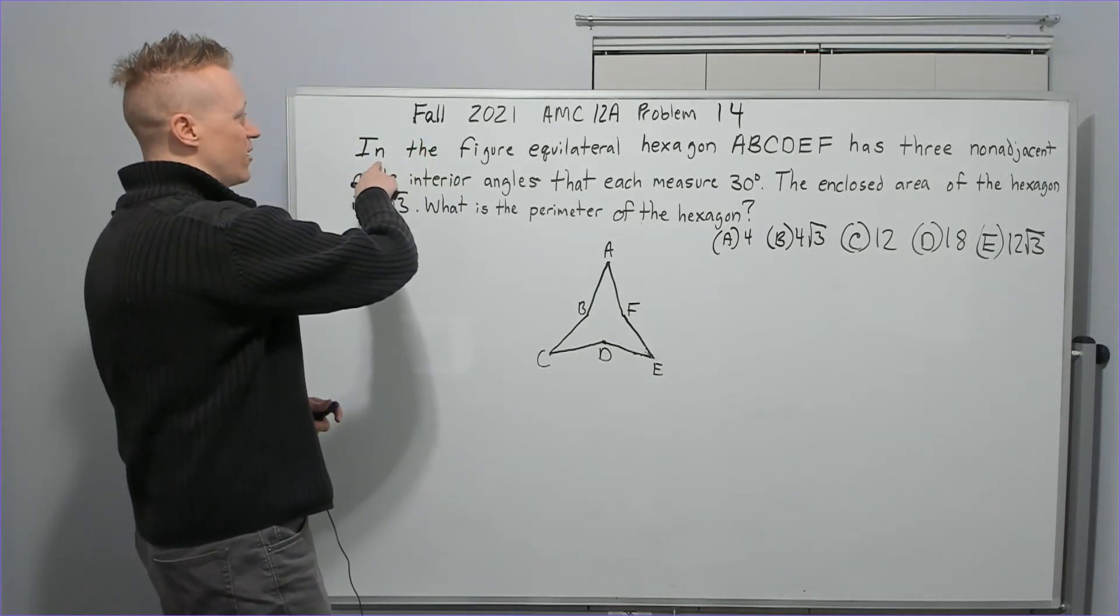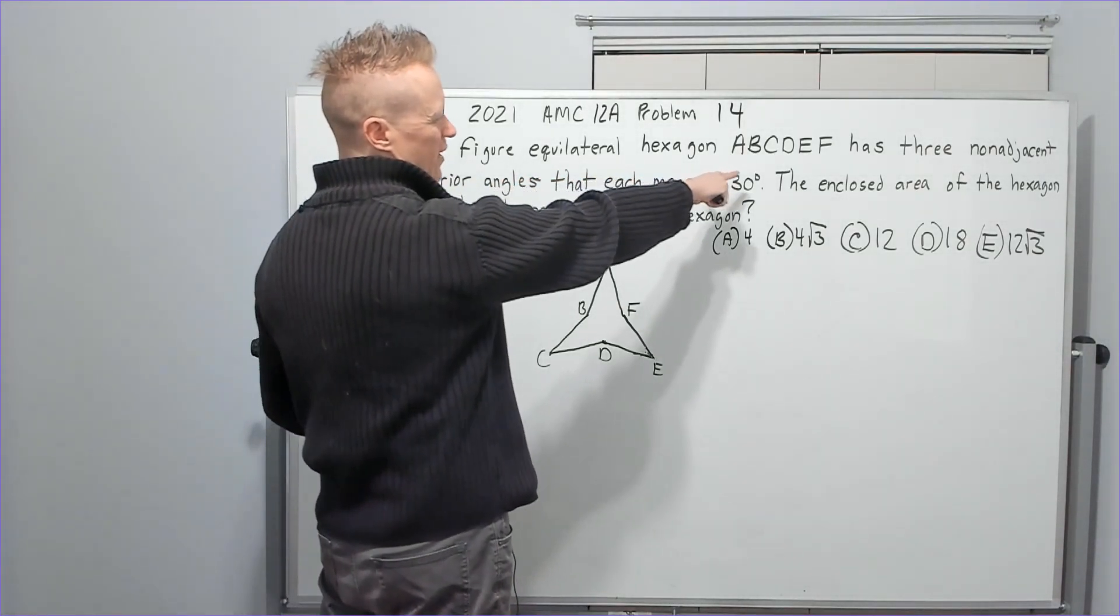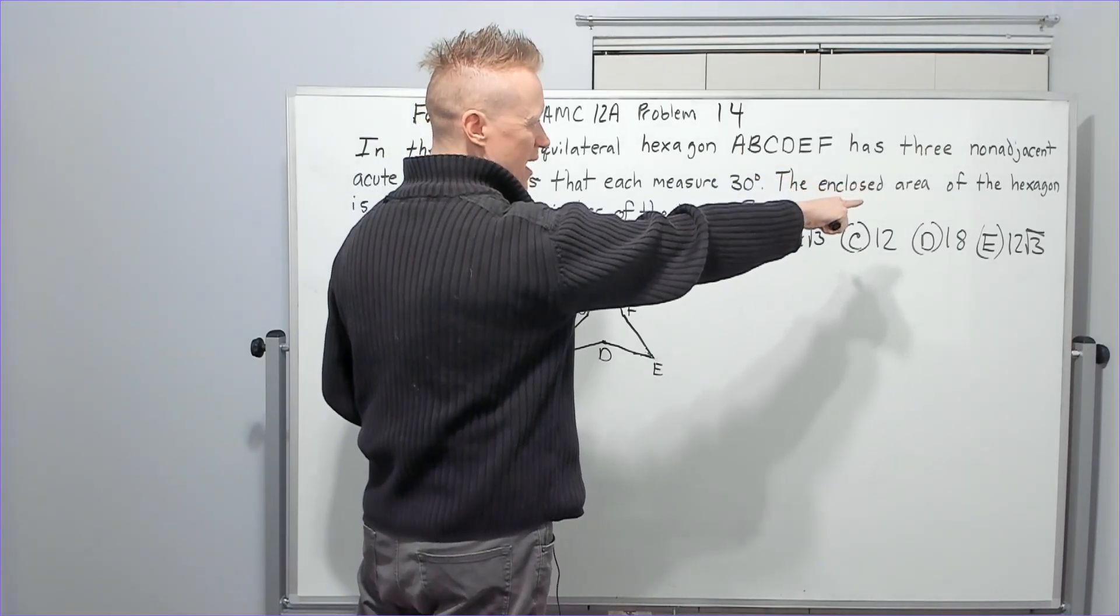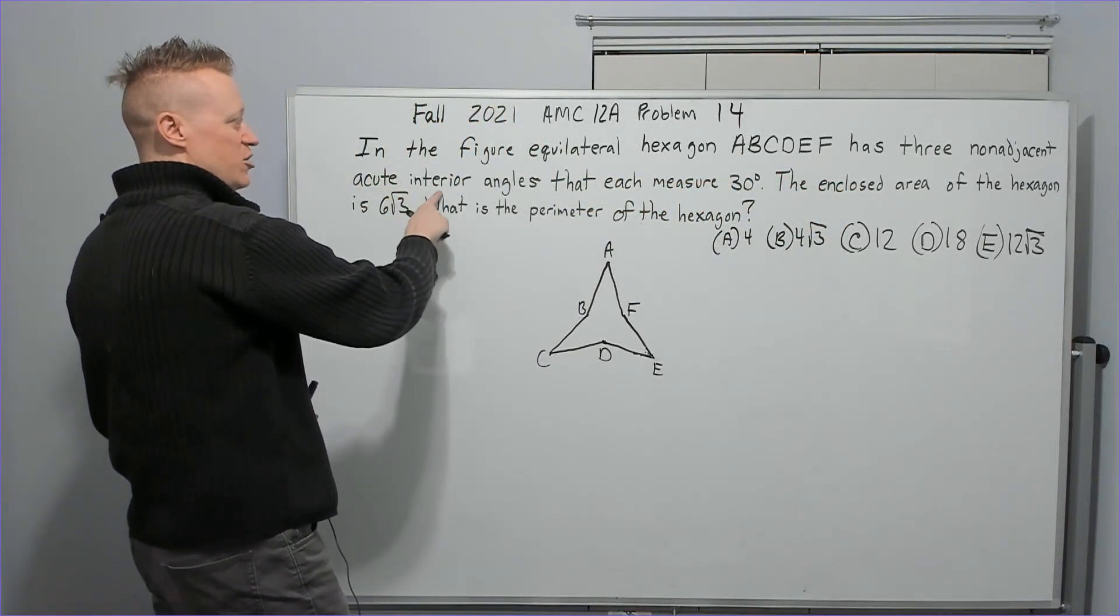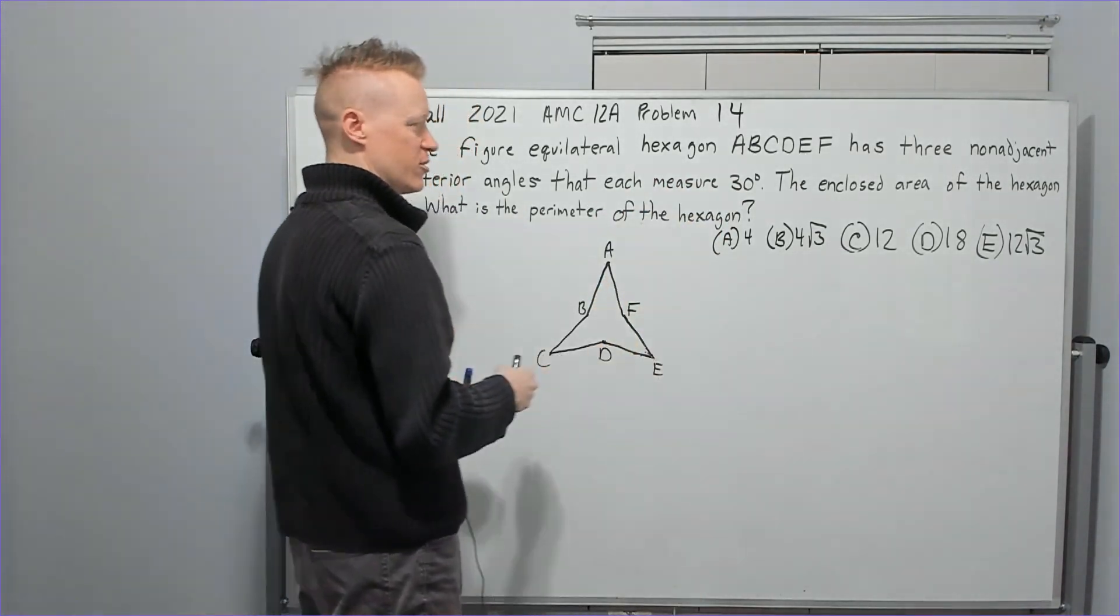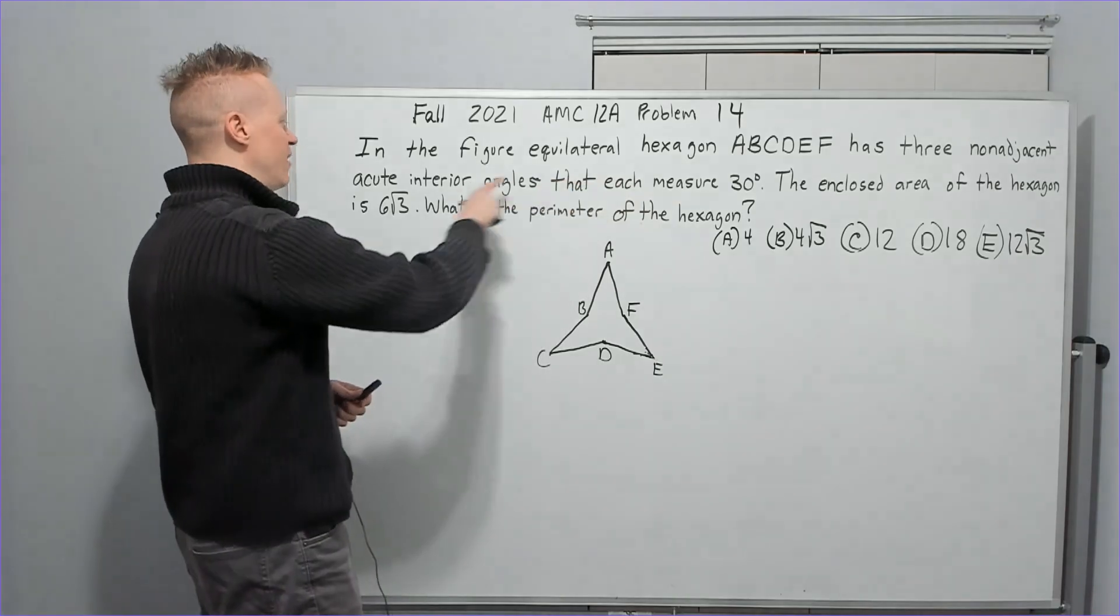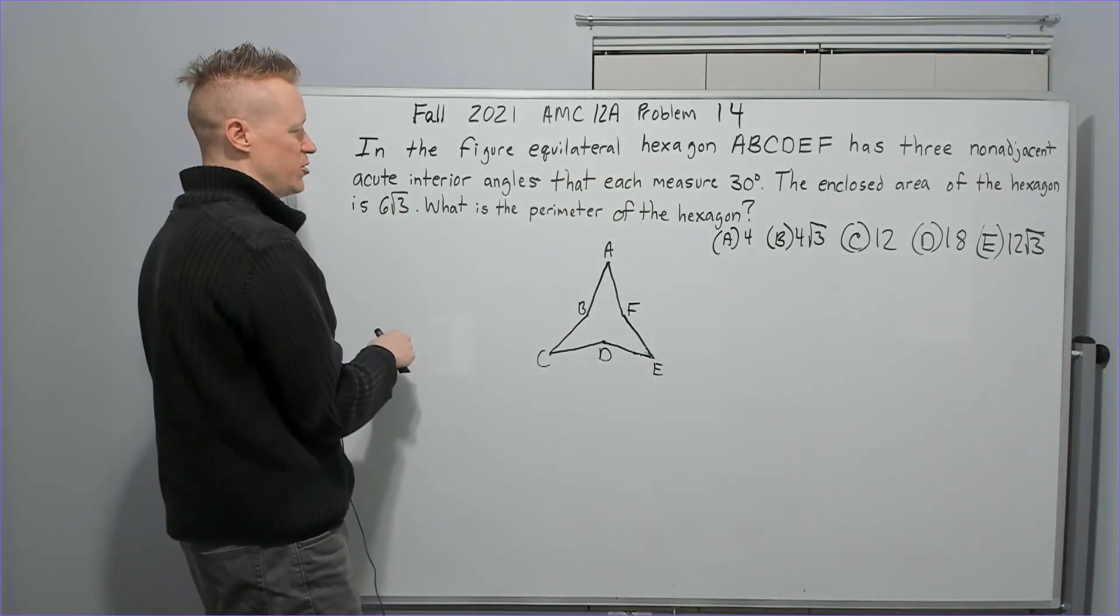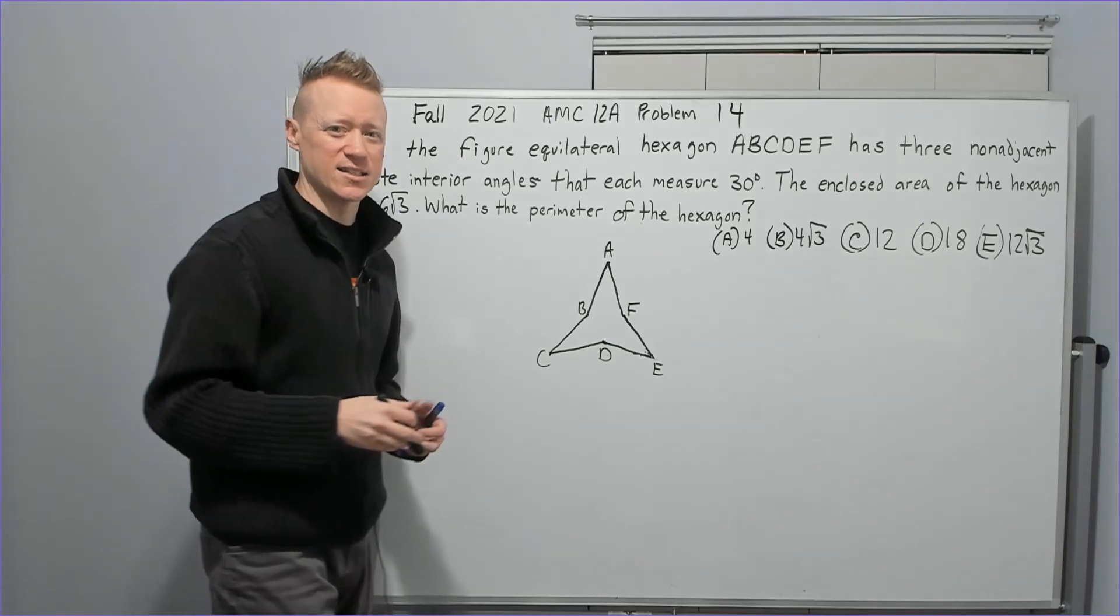So let's get started here. In the figure, equilateral hexagon ABCDEF has three non-adjacent acute interior angles, these ones, that each measure 30 degrees. The enclosed area of the hexagon is 6 root 3. What is the perimeter of the hexagon?